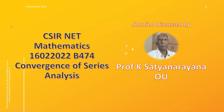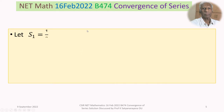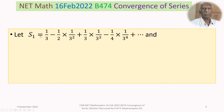We now discuss the solution of the problem from the section analysis, on the convergence of the given two series. This question appeared in the CSIR National Eligibility Test held on 16 February 2022, from section B. The problem is: let S1 equal 1/3 minus 1/2 times (1/3)² plus 1/3 times (1/3)³ minus 1/4 times (1/3)⁴, plus so on and so forth.